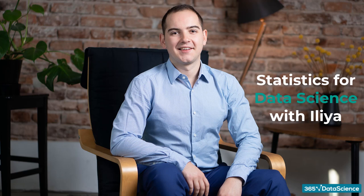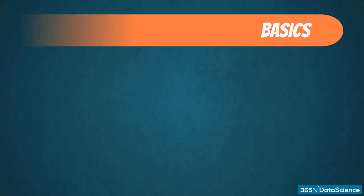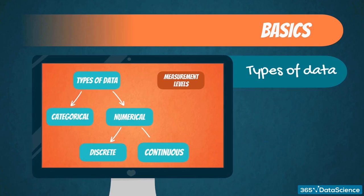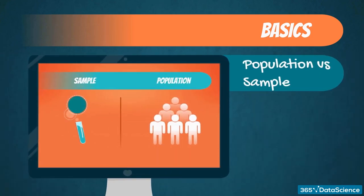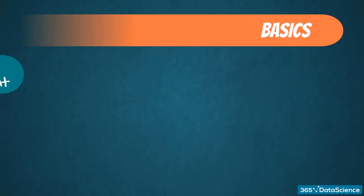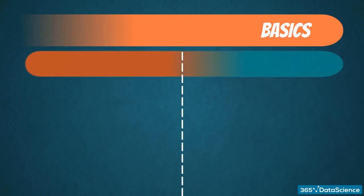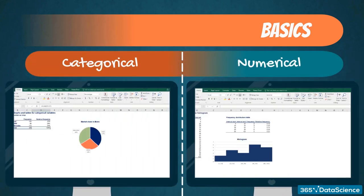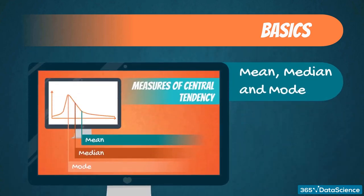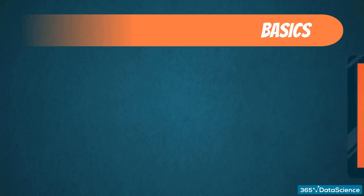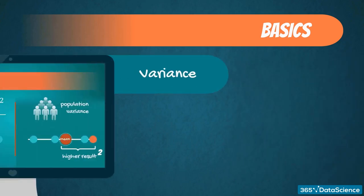First, we will start with the very basics. We will learn about the different types of data, and we will distinguish between population and sample data. We will study the levels of measurement we can use, the difference between categorical and numerical variables, how to plot data, how to measure mean, median, and mode, and how to quantify variability.